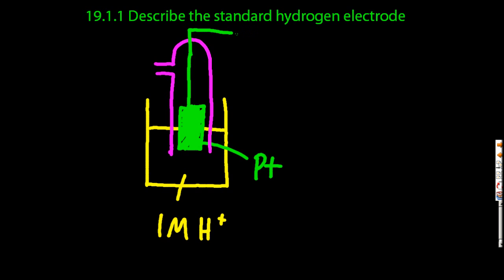is to get hydrogen gas and bubble that hydrogen gas at one atmosphere through this little hole, so it will go over the platinum electrode and then be bubbled into the water, into the one molar acid solution and bubble out again.